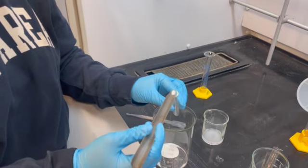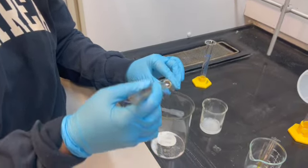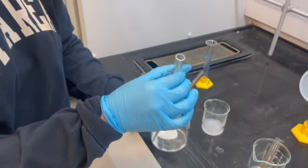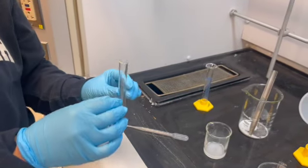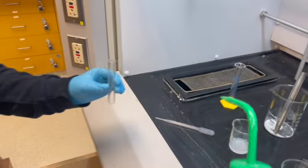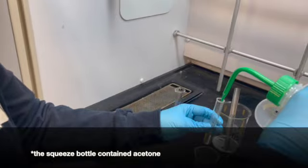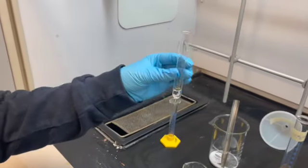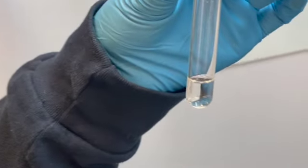Now we're going to be taking our solid into a test tube that we cleansed with acetone to dissolve it in more acetone so that we can get the IR reading. Here we have our solid dissolved in acetone.